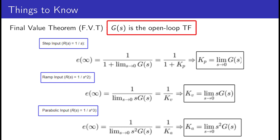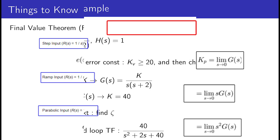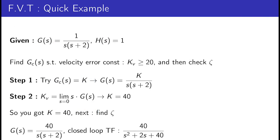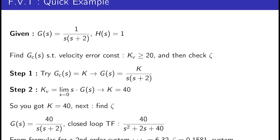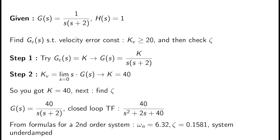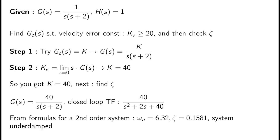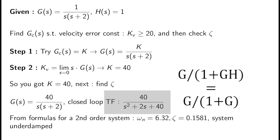Here's a quick example of the final value theorem. The sensor H(s) equals one and G(s) equals one over s times (s plus 2). You have to find GC(s) such that the velocity error constant KV is greater than 20. The first step is to set GC(s) equal to K, so G(s) becomes K divided by s times (s plus 2). To find KV, take the limit of s times G(s) as s approaches zero.